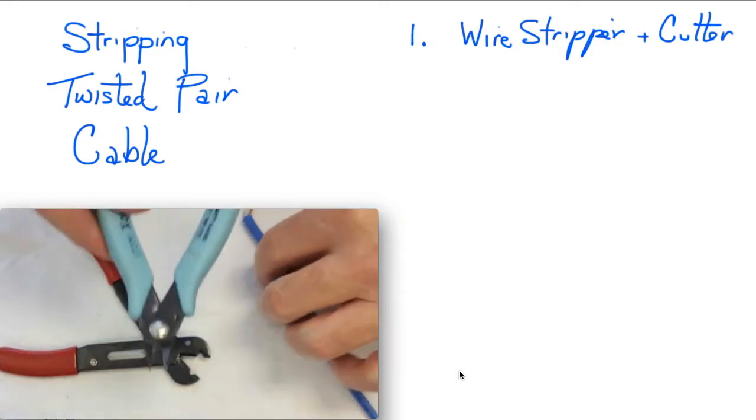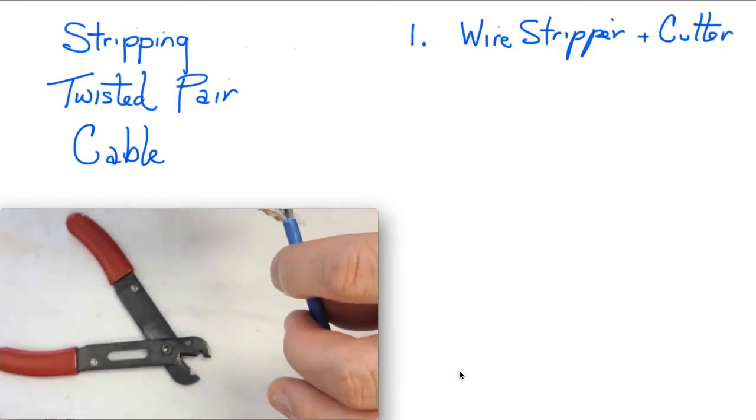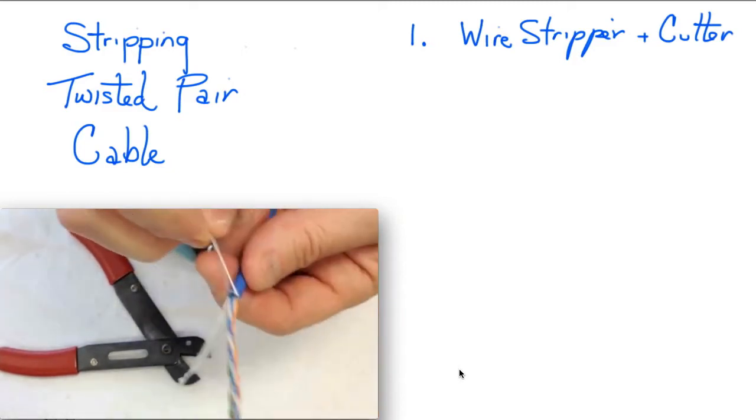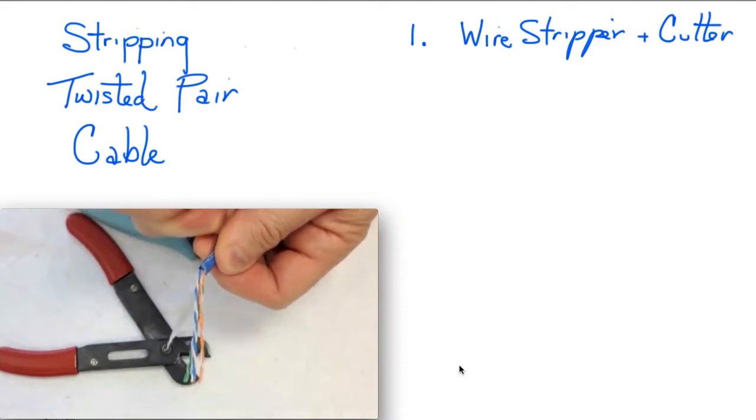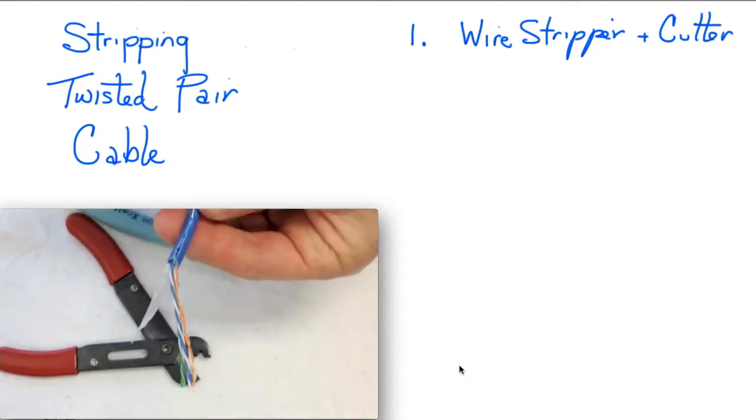But right now what we're going to do is we're going to make a little notch in the jacket and we're going to use what's called the ripcord. That's the small element to actually rip more of the jacket. So as I'm pulling here, you can see I'm removing more of the jacket.